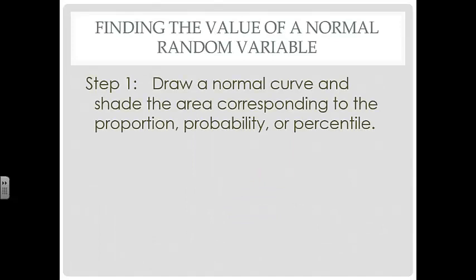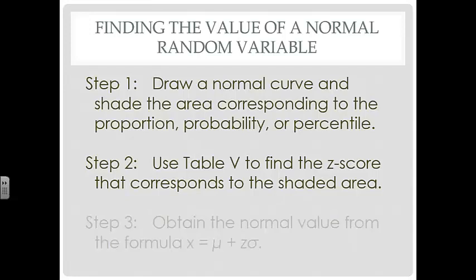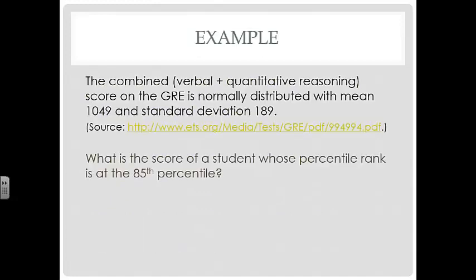To find the value of a normal random variable: first draw a normal curve and shade the area corresponding to the given proportion, probability, or percentile. Then use the Z-table to find the Z-score corresponding to that shaded area. Finally, obtain the normal value using the formula X equals mu plus Z times sigma.